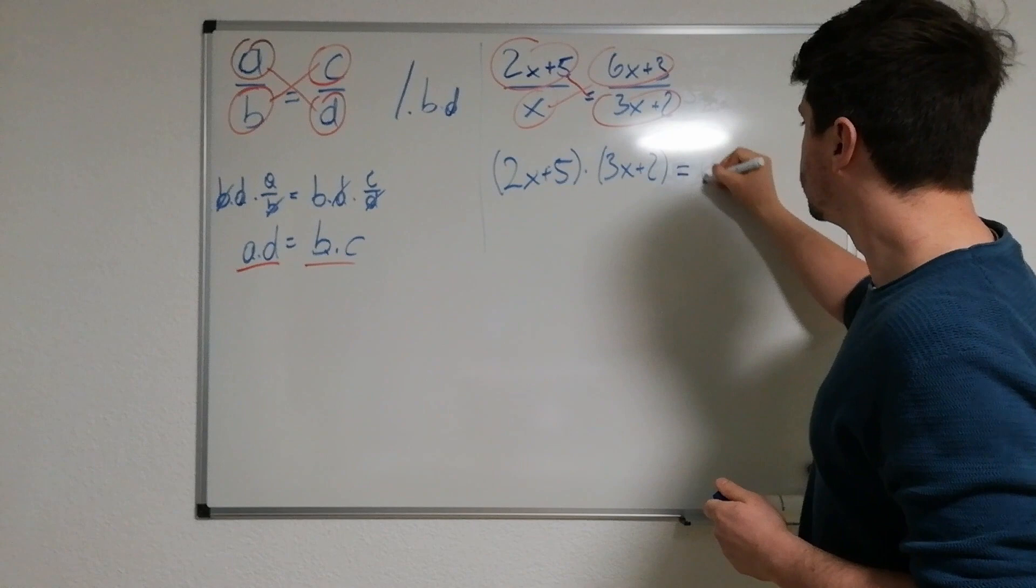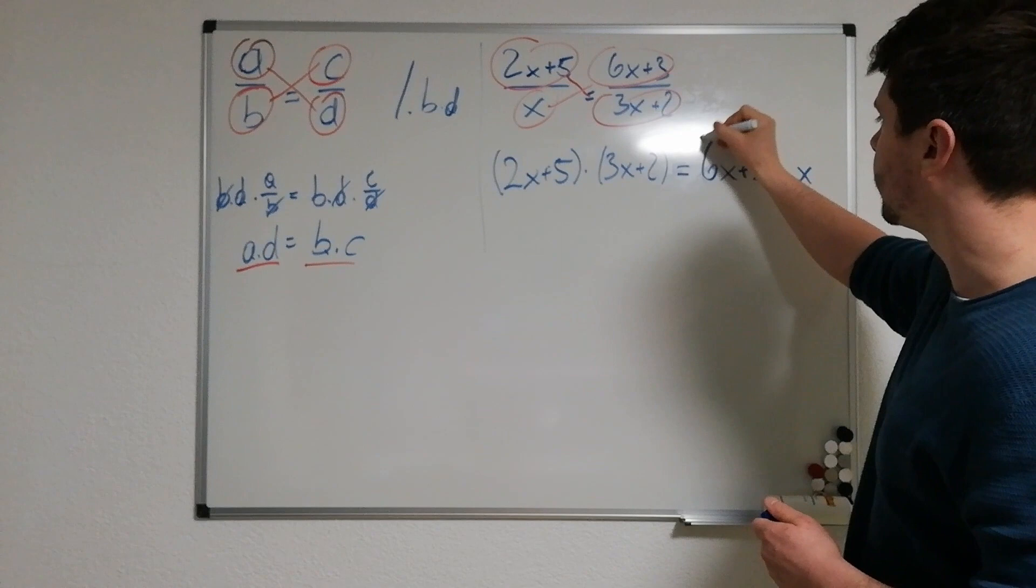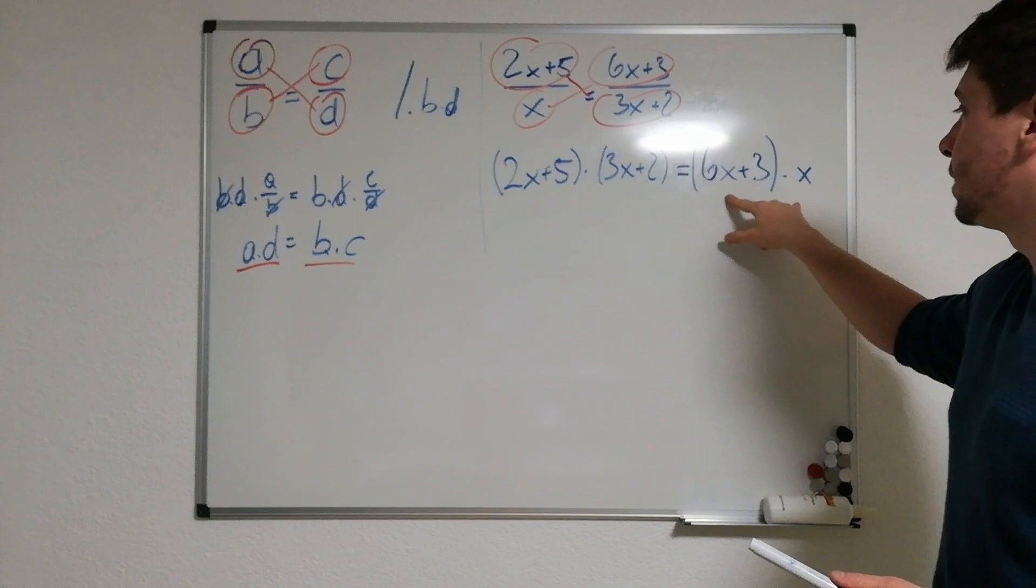6x plus 3 times x. Oh, I forgot the brackets, we have to take the brackets there. Yeah, and now you just multiply this out, multiply this out, then you cut whatever you can cut, and you know how this goes.